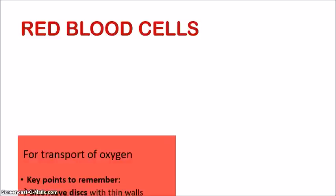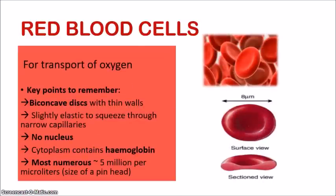Now let's look at the red blood cells. Red blood cells are important for transporting oxygen, which is needed for respiration to produce energy — so red blood cells are extremely important. In terms of their structure, they are biconcave discs with thin walls. If you look at the picture, you can see that the rims of the red blood cells tend to be thicker than the center portion — that's what is meant by biconcave. Red blood cells also have a slight elasticity, allowing them to squeeze through narrow capillaries, which are very small blood vessels.